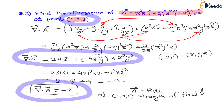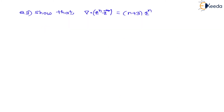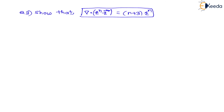Now let us understand the third question. They are asking: show that divergence of r^n·r⃗ equals (n+3)r^n. This condition is very important. At the end you have to remember this result, so that if any other question comes with r⁴, r⁵, or r⁷, you can directly answer using this result. So let us prove this.